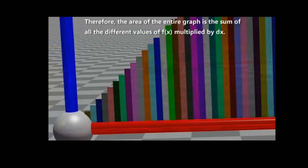Therefore, the area of the entire graph is the sum of all the different values of f of x multiplied by dx.